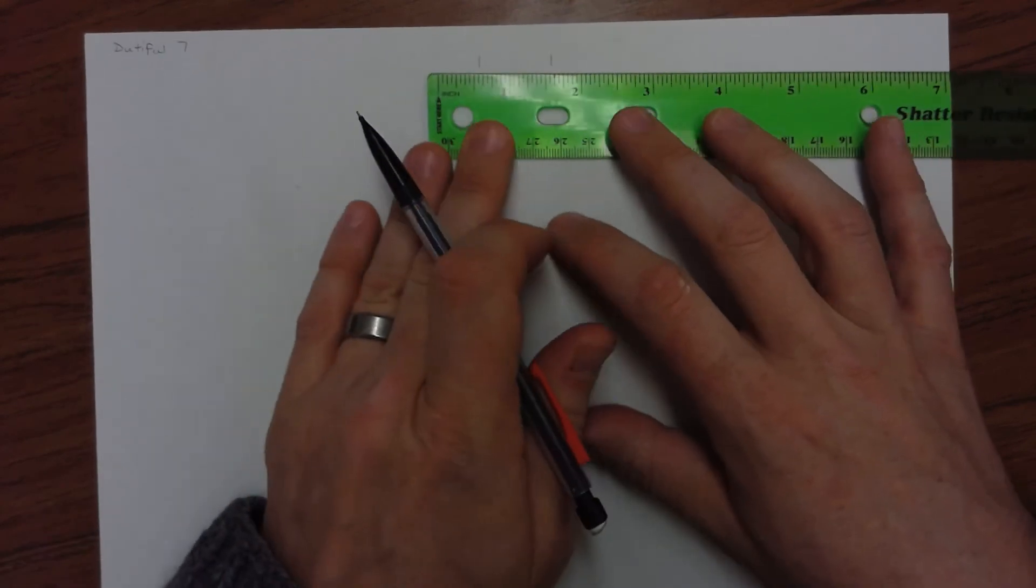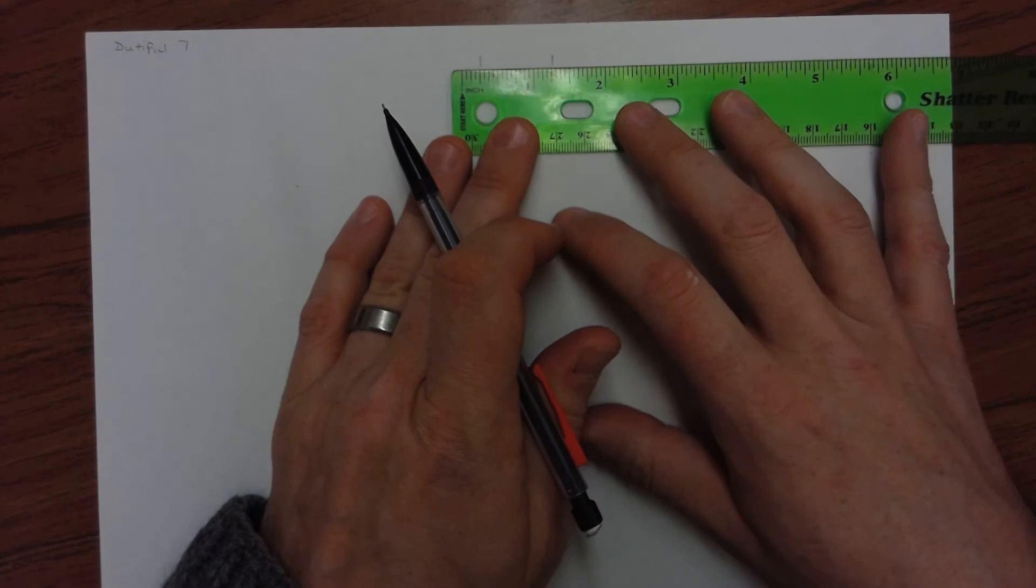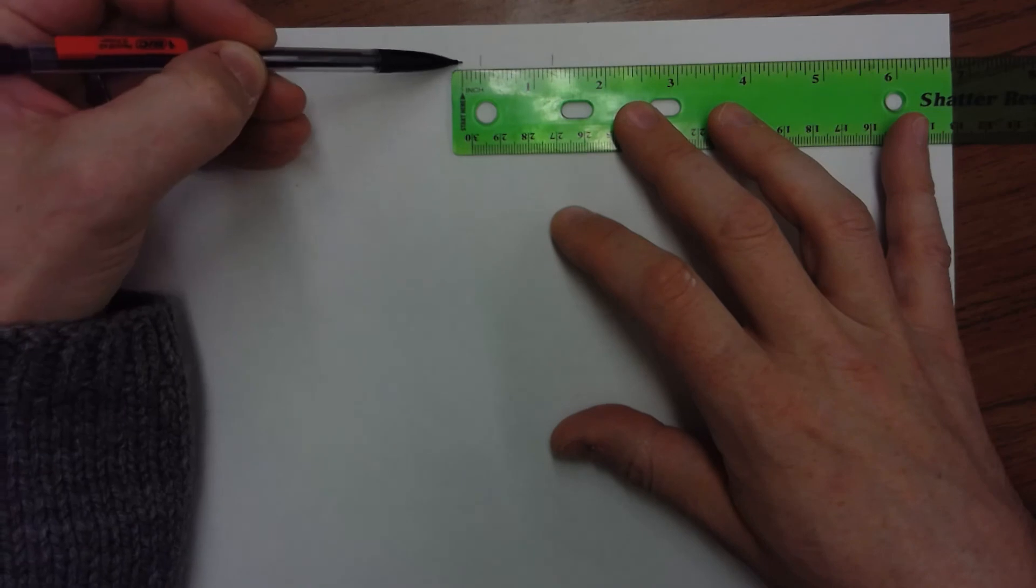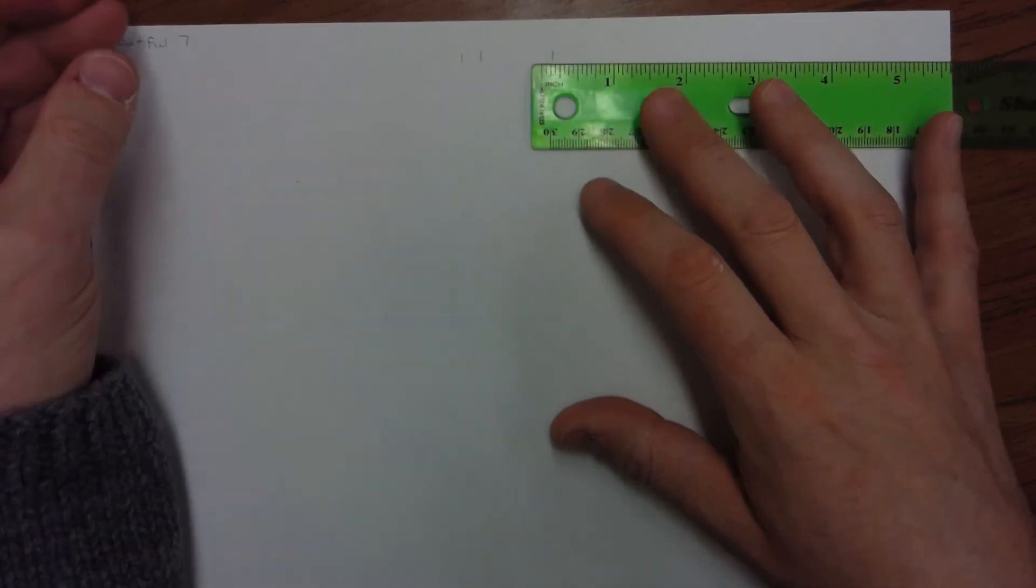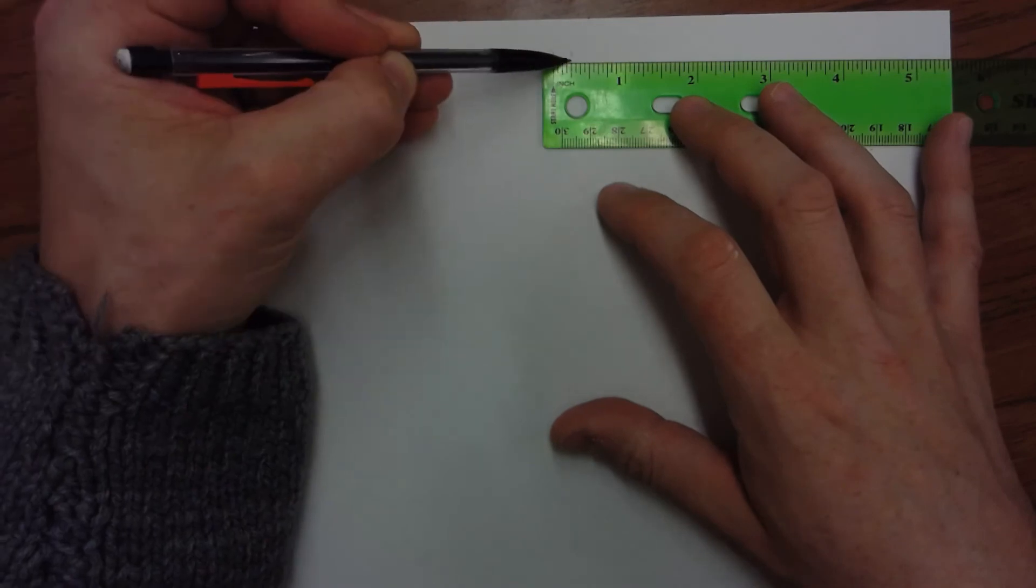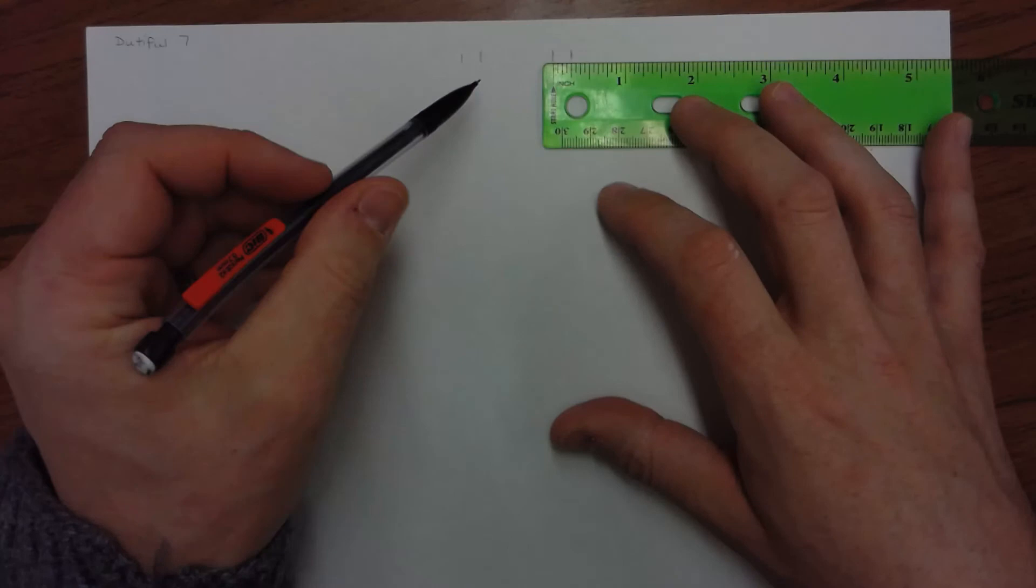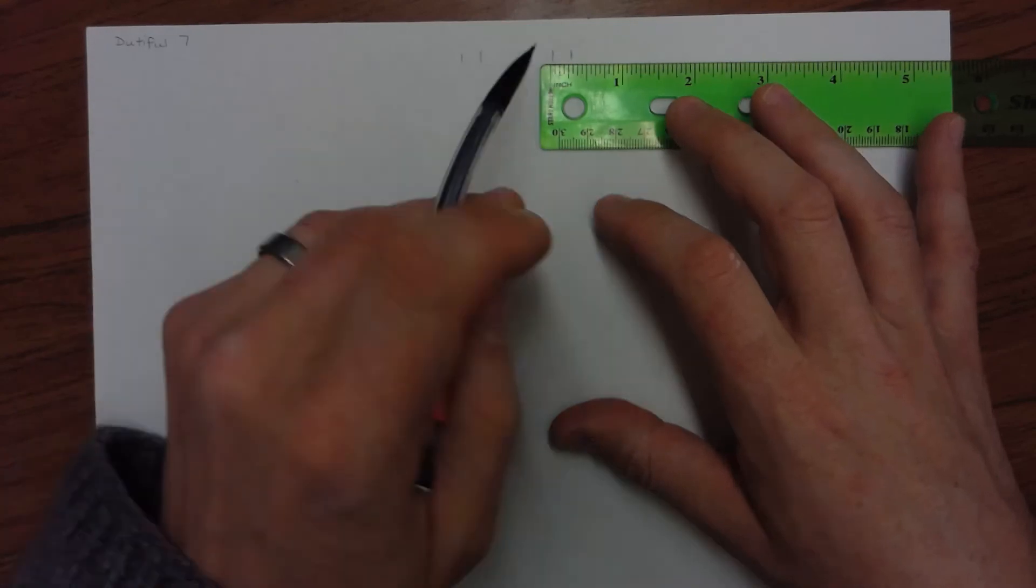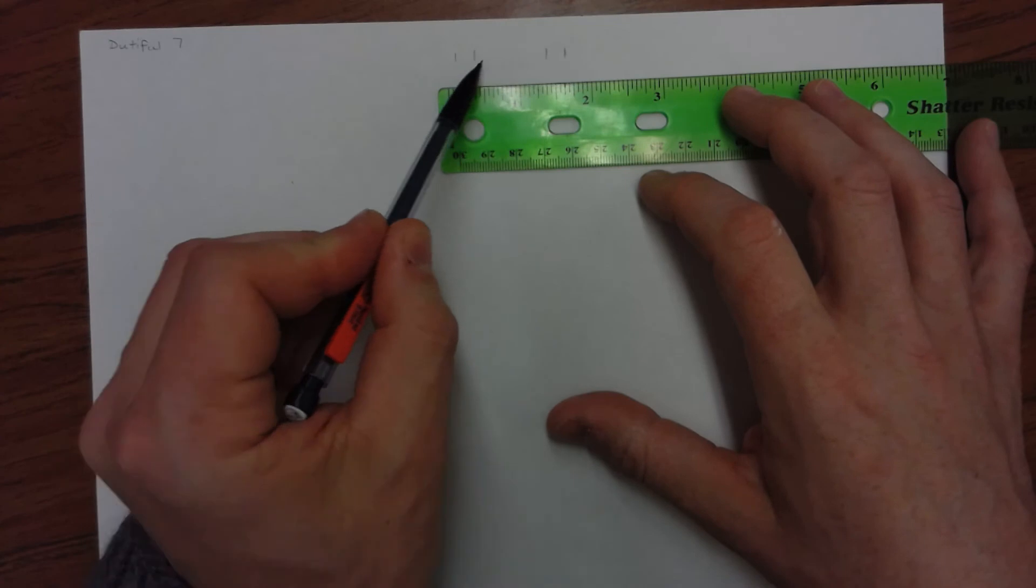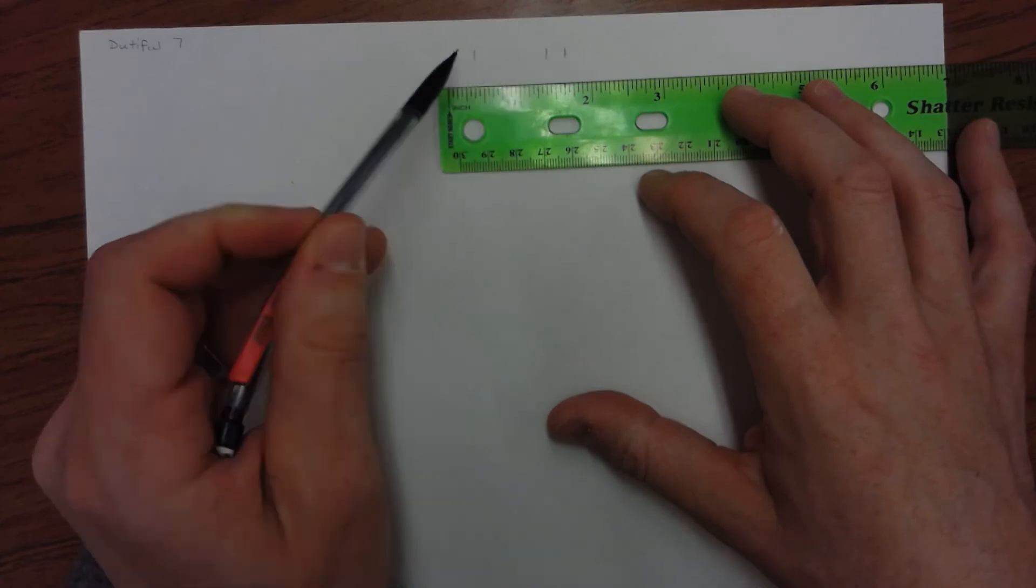And then I'm going to come over a quarter of an inch to the left and a quarter of an inch to the right. These are going to be the spaces between the letters. So this is a letter, one inch. This is the space, a quarter of an inch.